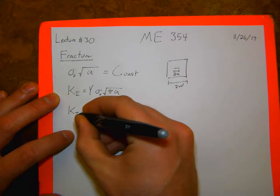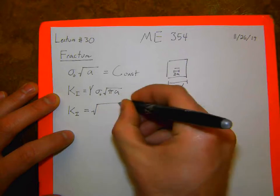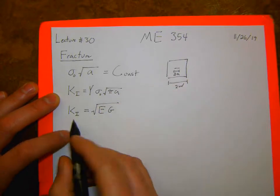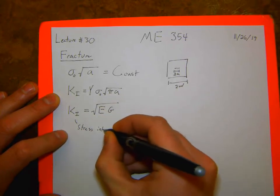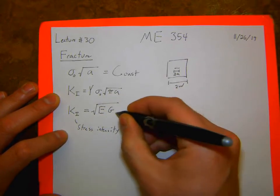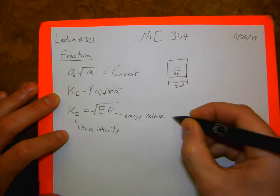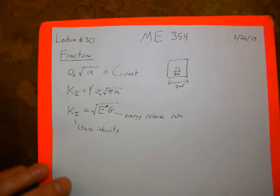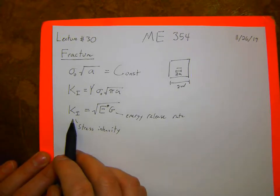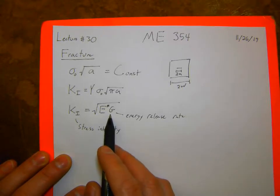KI is equal to some constant depending on the geometry, sigma-naught times the square root of pi A. We can relate that stress intensity based on the Griffith and Irwin criteria to an energy release rate, where KI equals the square root of E*G. This is the stress intensity factor and this is the energy release rate. I noted that this was an E-star, and I'll show you why.